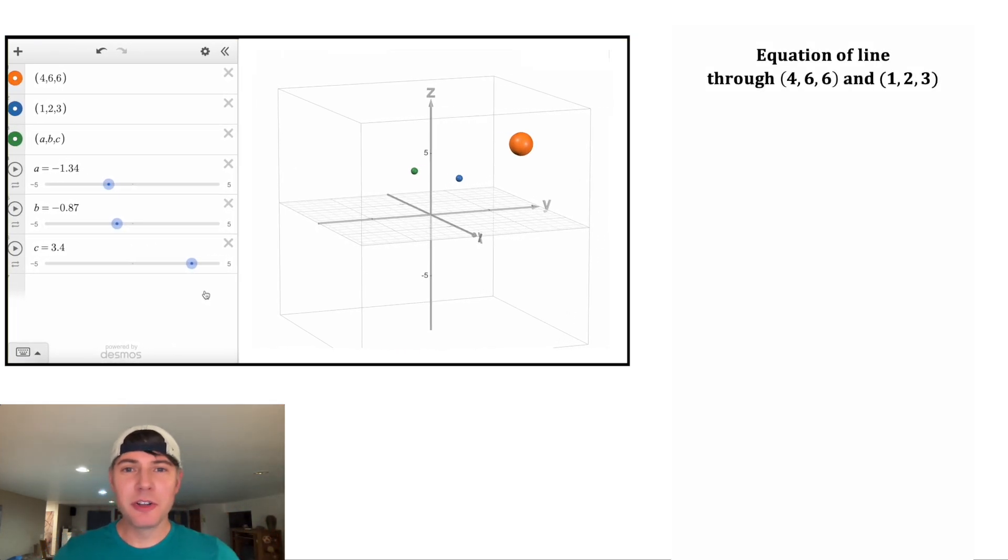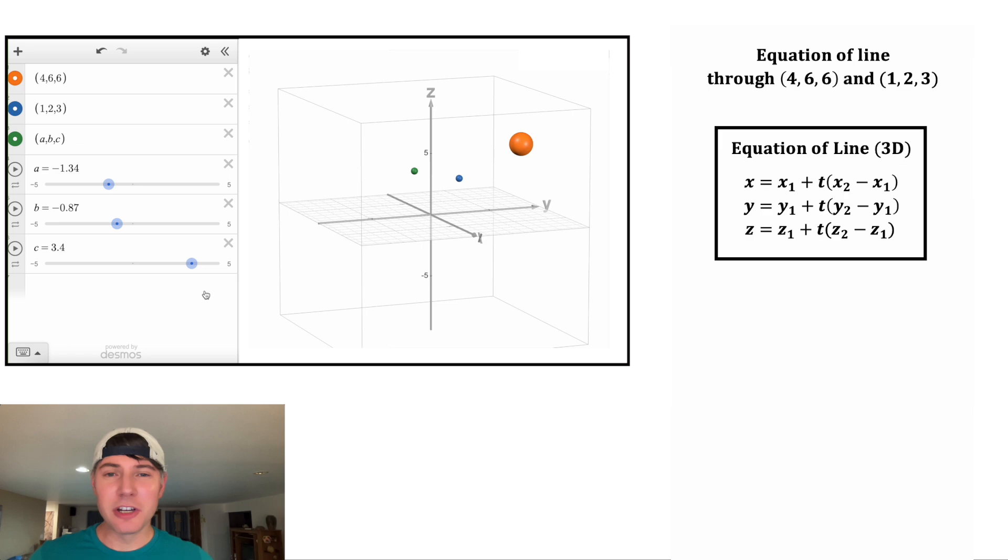So first we're going to do the equation of the line through our sun (4,6,6) and that point (1,2,3). And here are the notes for the equation of a line in 3D. So this x sub 1, y sub 1, and z sub 1, those are the coordinates of our first point. So that'll be x sub 1, y sub 1, z sub 1.